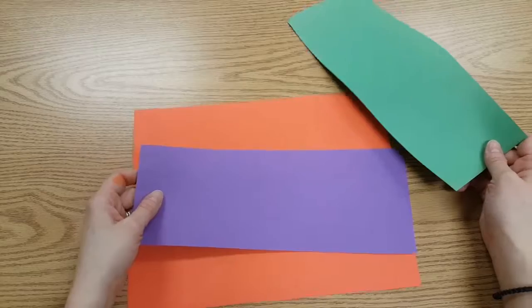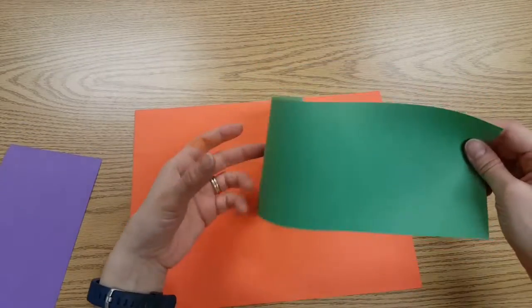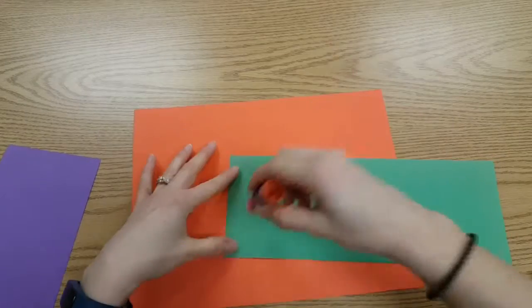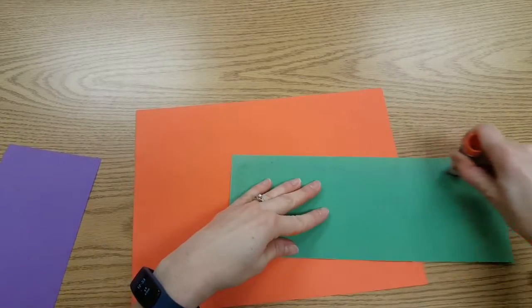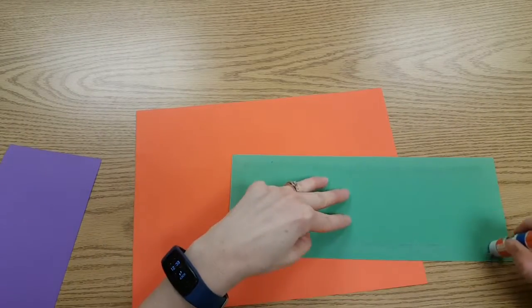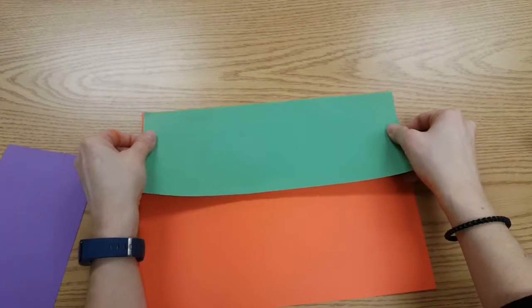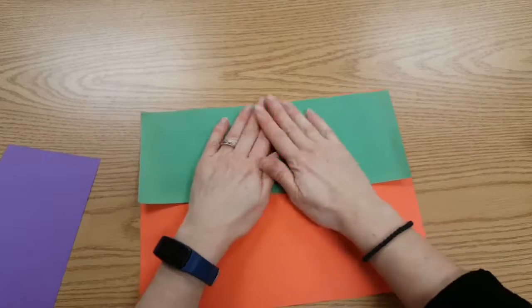And with these pieces that are left, I'm going to make it so I have a green sky. So I'm going to take this large piece of paper, put a little glue on the edges, line it up, and stick it down.